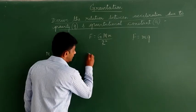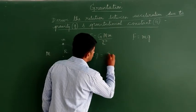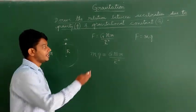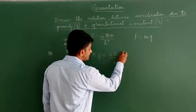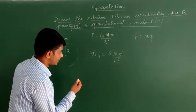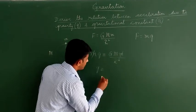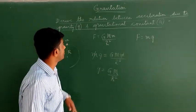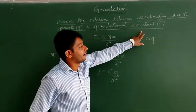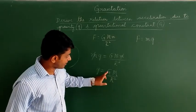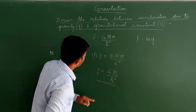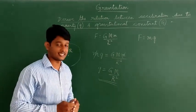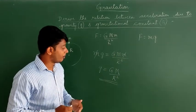Since force appears on the left side of both equations, we can equate them: m·g equals G·M·m divided by R². Cancelling m from both sides gives g equals G·M divided by R². This is the relation between acceleration due to gravity and gravitational constant. This is very important and problems may be based on this relation.